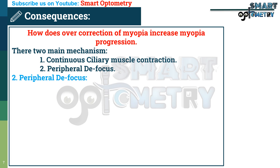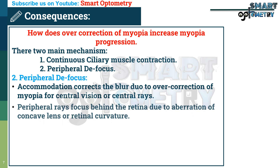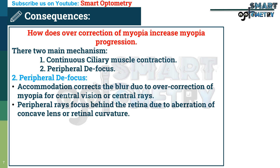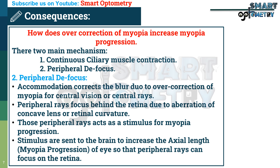Peripheral defocus: accommodation corrects the blur due to over-correction of myopia for central vision or central rays. However, the peripheral rays focus behind the retina due to aberration of the concave lens or retinal curvature. Those peripheral rays act as a stimulus for myopia progression, sending signals to the brain to increase the axial length of the eye so that peripheral rays can focus on the retina.